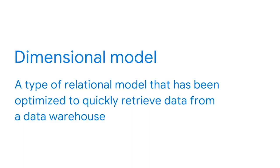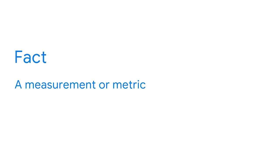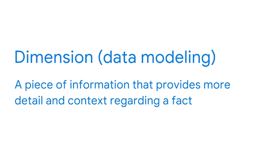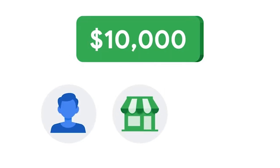A dimensional model is a type of relational model that has been optimized to quickly retrieve data from a data warehouse. Dimensional models can be broken down into facts for measurement and dimensions that add attributes for context. A fact is a measurement or metric — for example, a monthly sales number could be a fact. A dimension is a piece of information that provides more detail and context regarding that fact: the who, what, where, when, why, and how. So if our monthly sales number is the fact, then the dimensions could include information about each sale — the customer, the store location, and what products were sold.